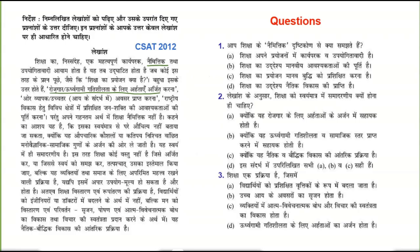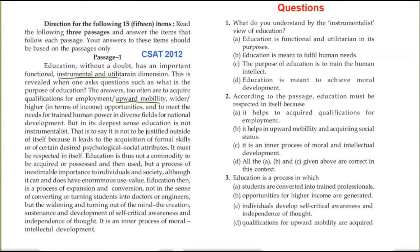Now, the passage consisting of three questions — it will be a mixture of long, medium and short questions. This paper is of CSET 2012. The Hindi passage here is quite typical. If we shift to the English, then 'upward mobility' is much easier to understand. You can shift to both languages simultaneously to sort out your problems. The questions — one, two, three — and this passage is about education without a doubt, with an important functional, instrumental and utilitarian dimension.